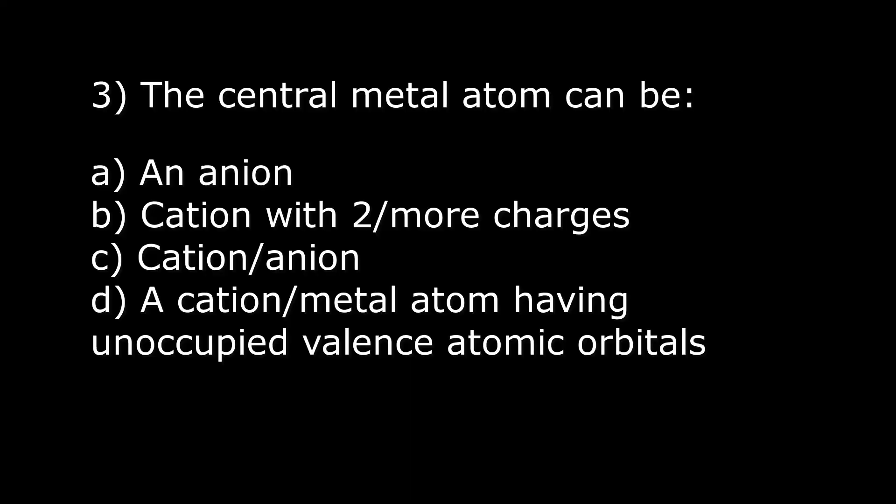Now the third question is an MCQ. The central metal atom can be: a) an anion, b) a cation with two or more charges, c) a cation or an anion, or d) a cation or metal atom having unoccupied valence atomic orbitals. The answer is d. It has to have unoccupied orbitals so it can form coordinate covalent bonds.